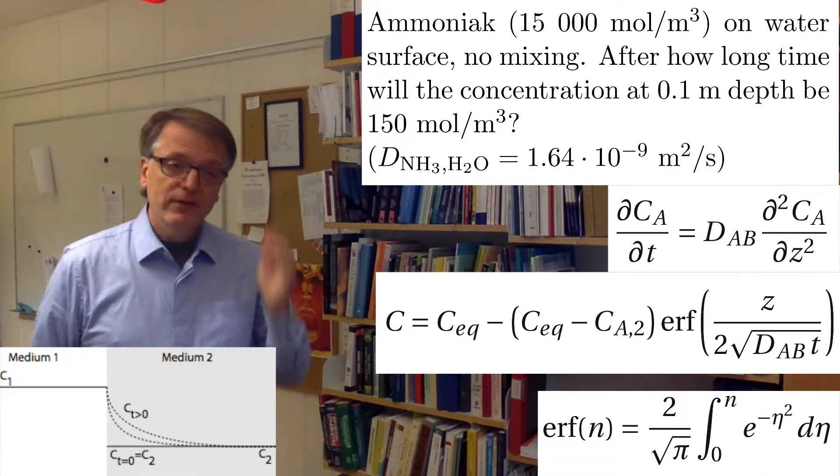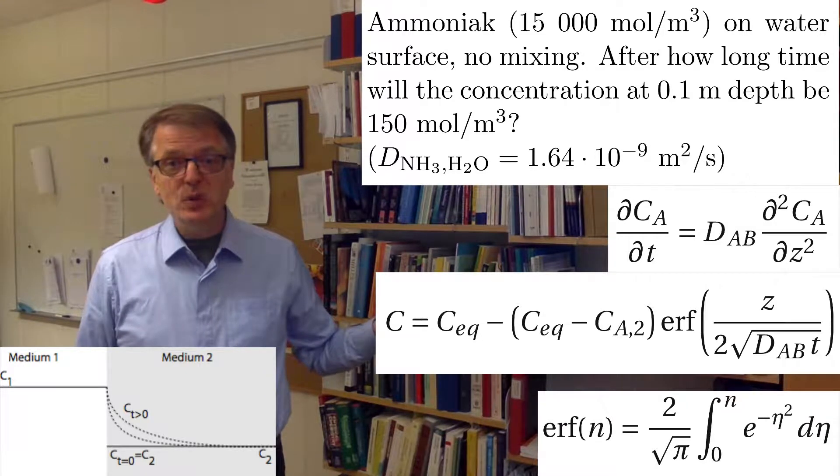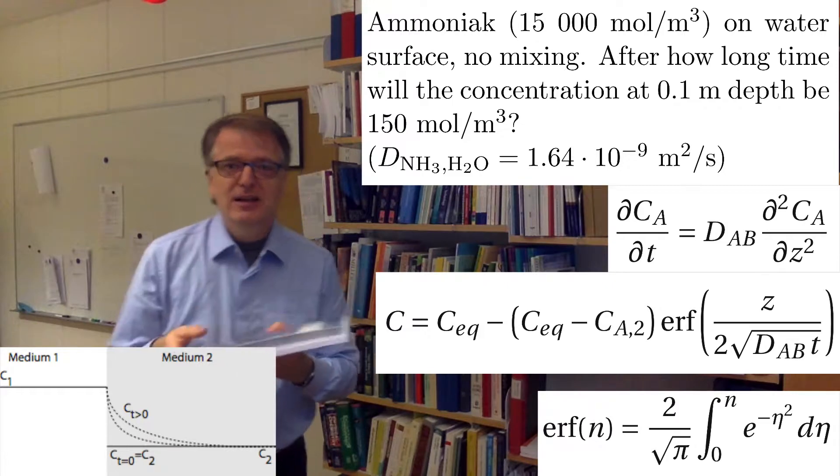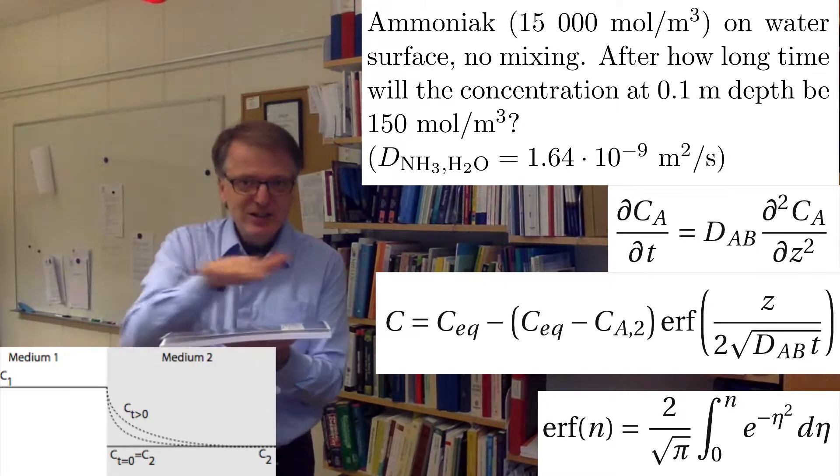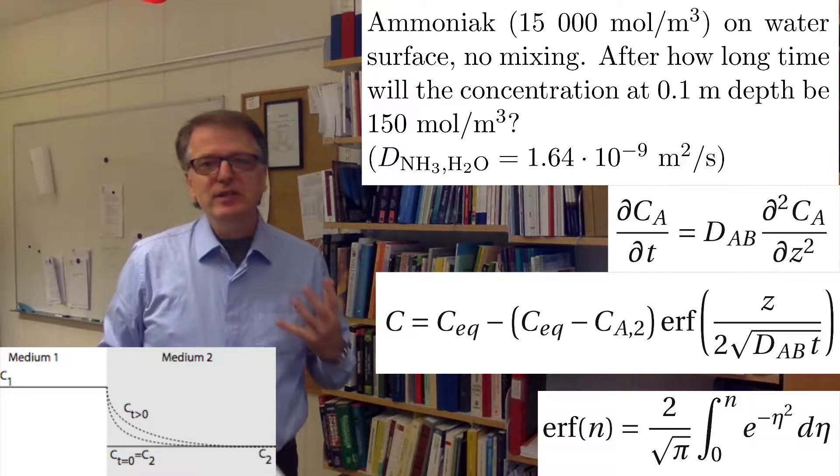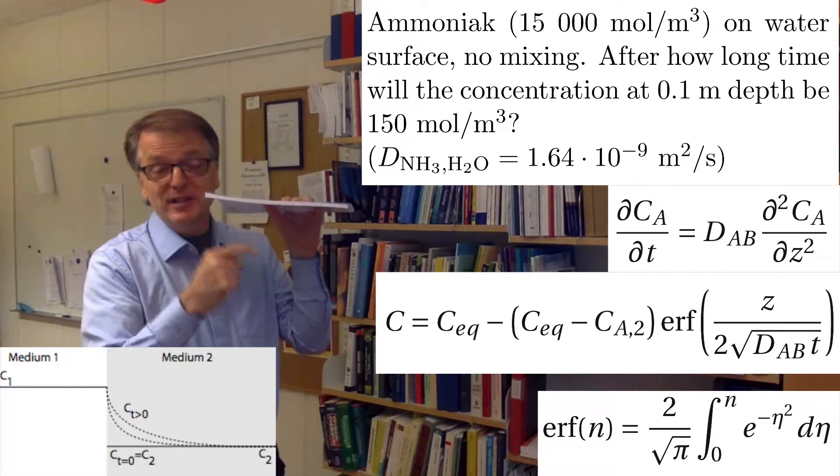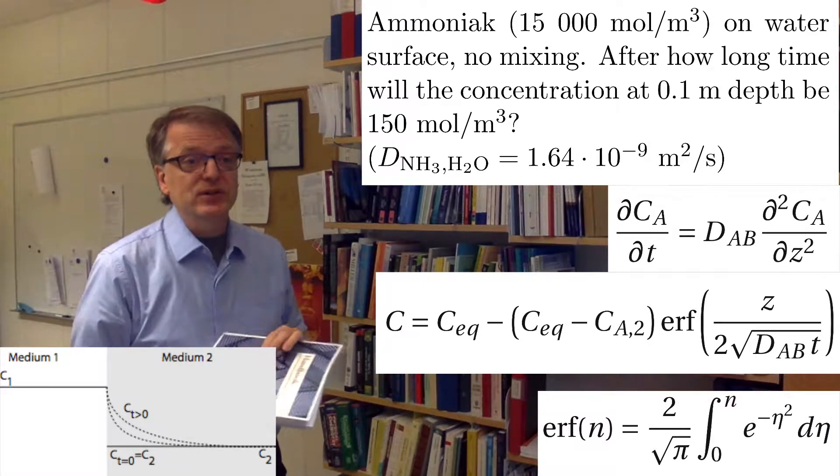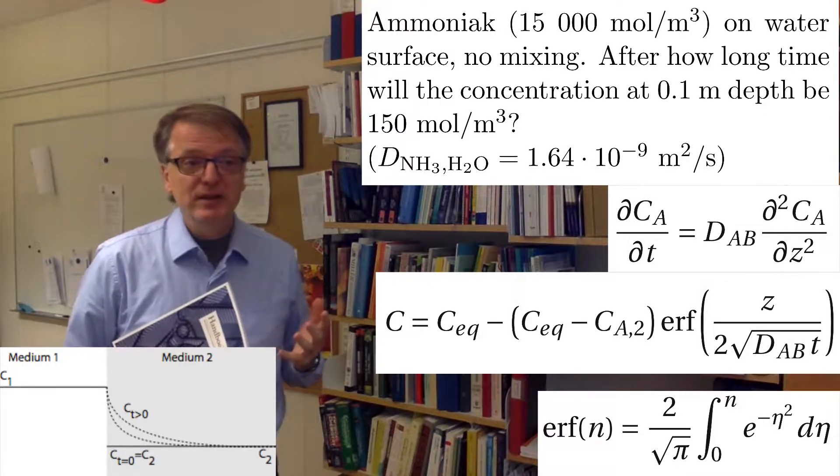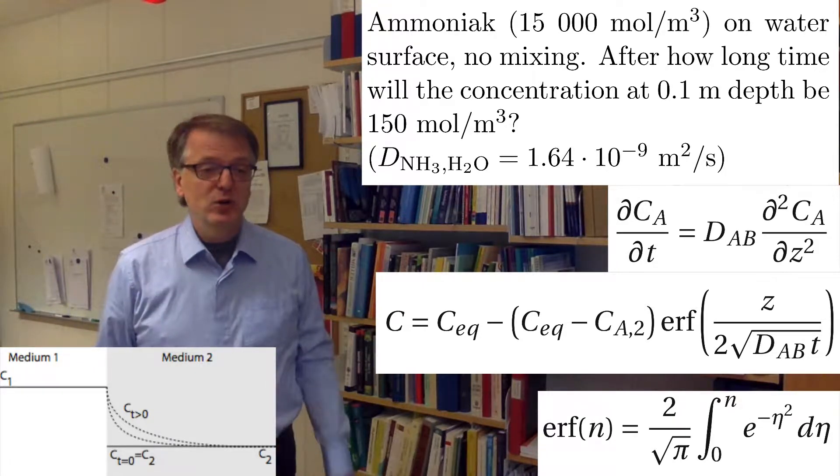So our example: you have 15 molar ammoniac that has been spilled out on a water surface. And we now assume that you have spilled it out so carefully, so it doesn't mix. So it's just laying as a layer on top of a water surface. And how long time will it take before the concentration, 10 cm down in the lake or the water surface, is 150 mol per cubic meter if the concentration in the spill is 15,000 mol per cubic meter.